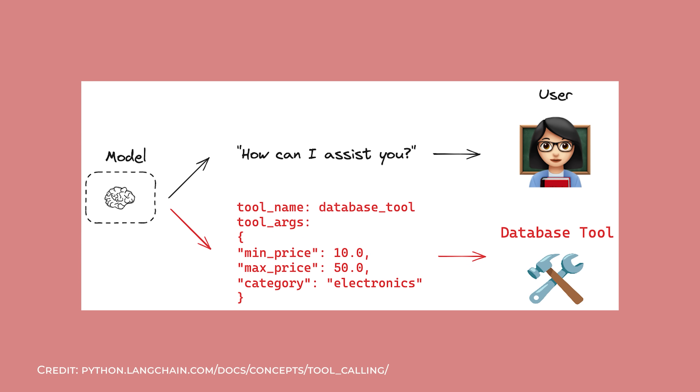But how do agents actually use tools? It's actually pretty simple. When you build an agent, you give it access to functions it can call — for example, a search_web(query) function, or a send_email(subject, body) function. The agent doesn't run this code directly. Instead, it generates a special message saying 'I want to call search_web with the query: weather in Paris.' And your application code actually makes that function call, then feeds the results back to the agent.